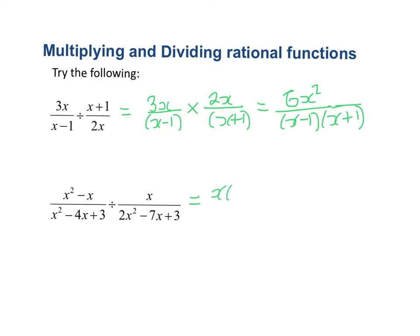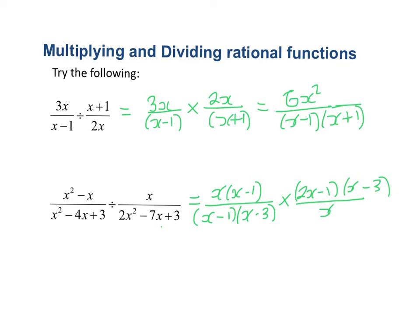For the second example, factorise the numerator to get x(x−1). Factorising the other expression gives (x−1)(x−3). Change to multiplication, giving over x. Factorising the remaining expression: 2x²−7x+3 gives (2x−1)(x−3). Now cancel the x's, the (x−3) with (x−3), and the (x−1) with (x−1). The final answer is 2x−1.